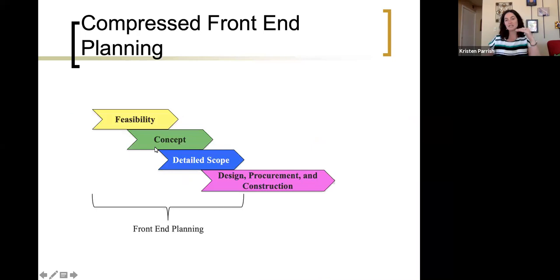What we found in recent research is that more and more projects are being fast-tracked or compressed. So the concept and detailed scoping are fairly overlapping, and then some of these scoping exercises will also overlap with design, procurement, and construction. So front-end planning really is all the way through until the end of detailed scope, regardless of what that comprises.